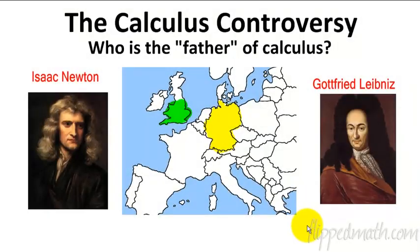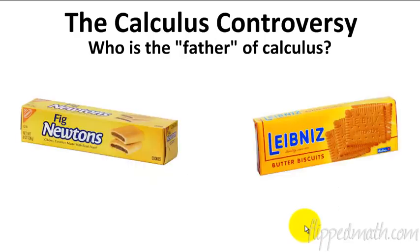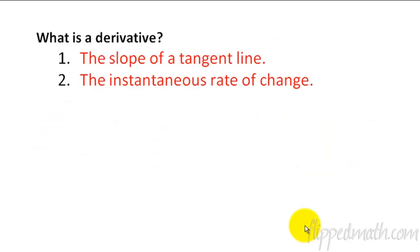Newton and Leibniz, independently without knowing each other, invented calculus. The relevant question is, what is it? Now they actually approach it different ways, and we're going to use their methods and strategies depending on the problem in calculus. But the most important thing about Leibniz and Newton is that they have some really yummy snacks named after them.